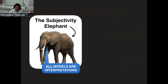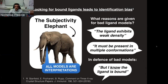The elephant in the room is that we are all humans interpreting this data, looking for bound ligands. We run the risk of confirmation bias — seeing a blob that looks like our ligand and modeling it because we want the ligand to be bound. We end up making excuses such as 'my ligand exhibits weak density,' 'it must be in multiple conformations,' or most dangerously, 'I know the ligand is bound, so therefore it's bound in the crystal,' which isn't always true.